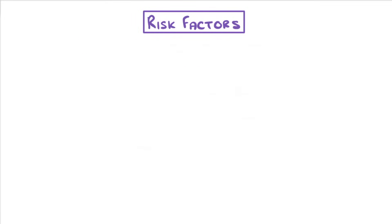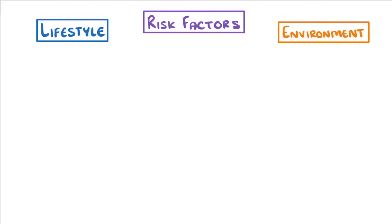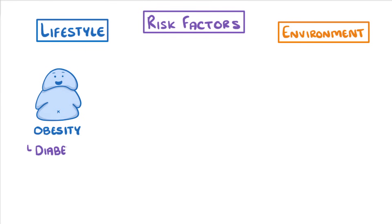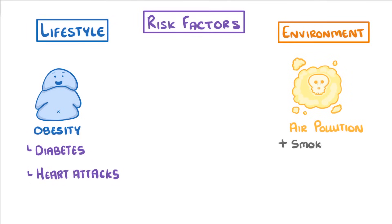Although it's difficult to categorise them, risk factors are often either aspects of a person's lifestyle or substances in the person's body or environment. For example, obesity, which is often due to poor lifestyle choices, is a risk factor for both diabetes and heart attacks, while exposure to air pollution and smoking are both risk factors for diseases like lung cancer.